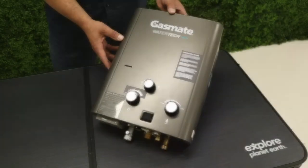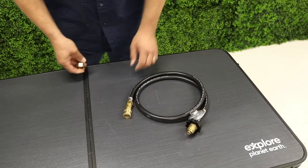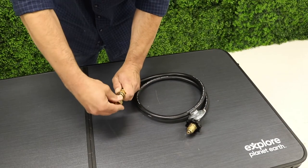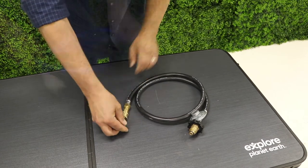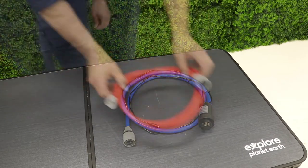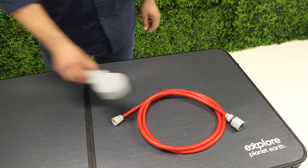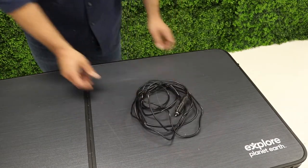Firstly let's have a look at what's in the box. The hot water unit, a 1200 millimeter hose and regulator, a quick connect gas fitting, silicon hose with pump, silicon hose with shower head, and the 12 volt DC power cord with cigarette plug.